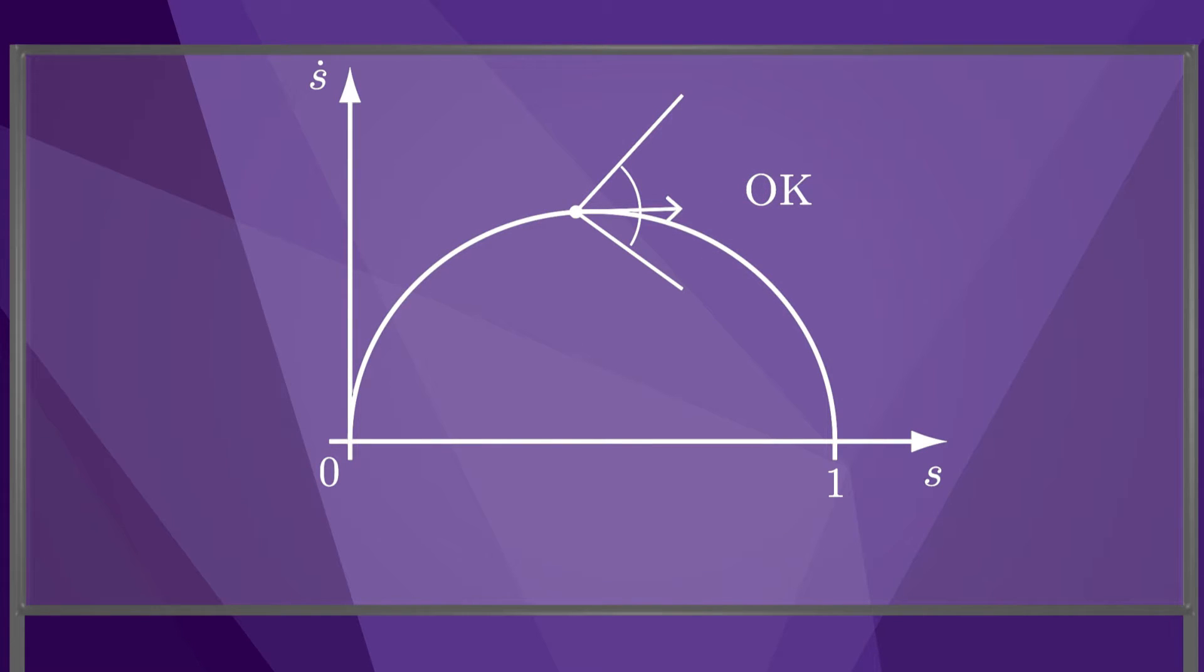Therefore, time-scaling like this would be OK at this state, as the tangent vector lies inside the feasible motion cone. If, instead, our feasible motion cone looked like this, the tangent vector is outside the cone, and this time-scaling is not possible according to the robot's actuator limits.